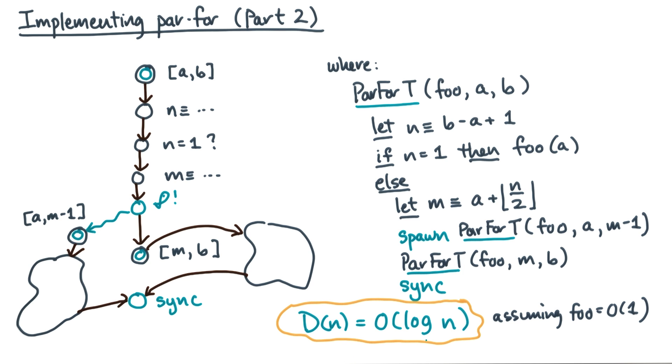And again, this is in contrast to assuming that the span is, say, constant cost, which is what it would be in theory.